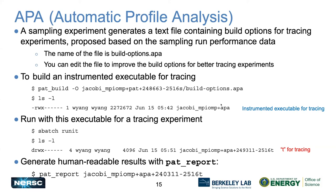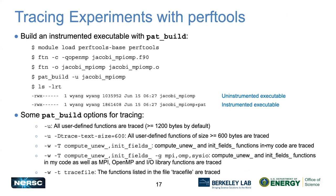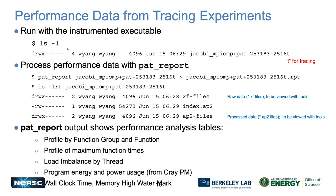The APA tool guides you to create the next tracing experiment from the sampling experiment. It creates an APA build option file, so you re-run pat-build using this file to create an instrumented version for tracing. When you run it, you get tracing results — T for tracing. You then run pat-report on that directory to get a text-based report. For the tracing experiment, instead of sampling, we have the actual time spent in each subroutine, giving more accurate information.